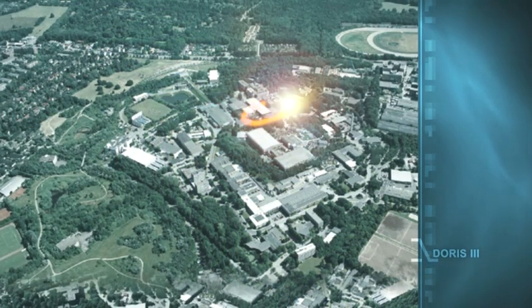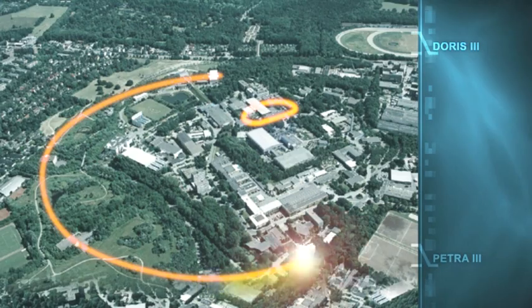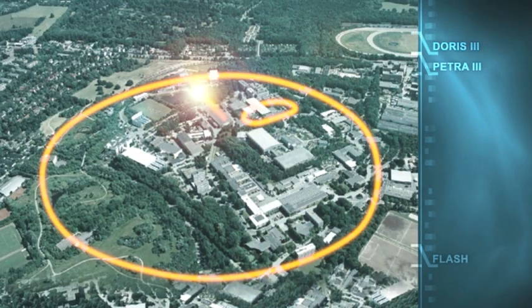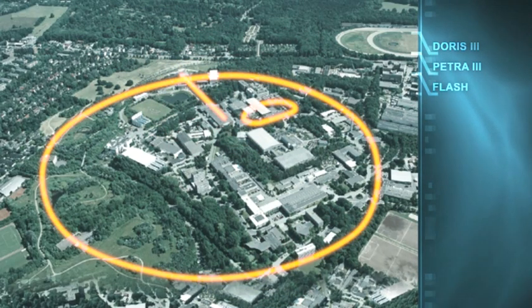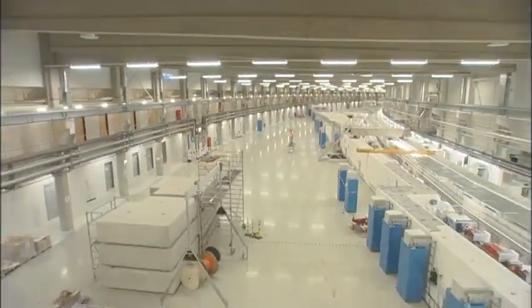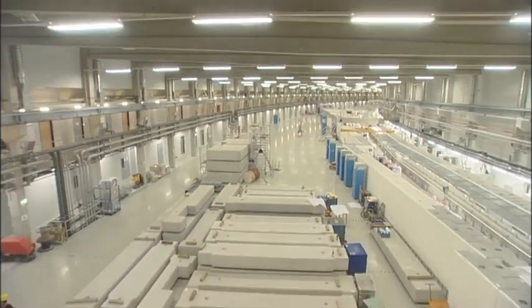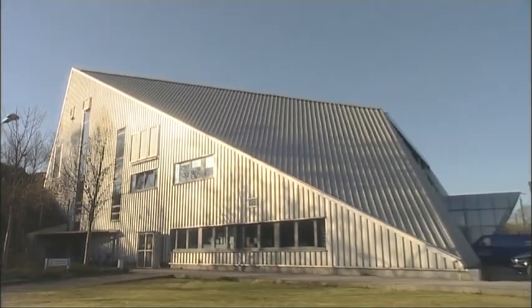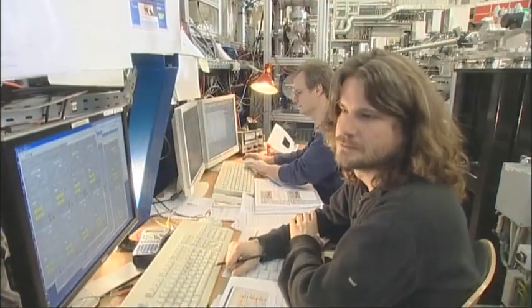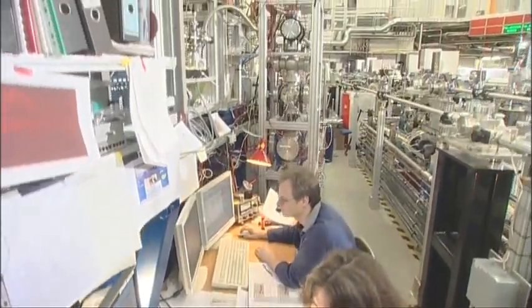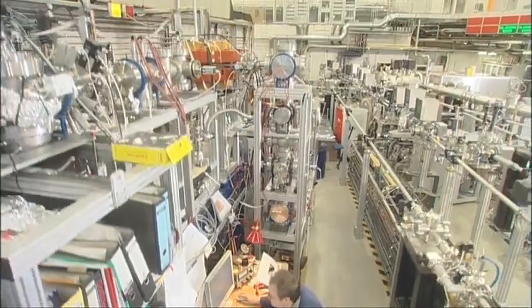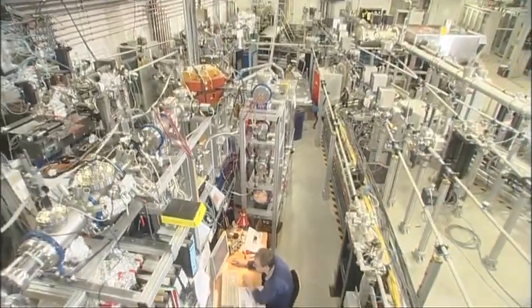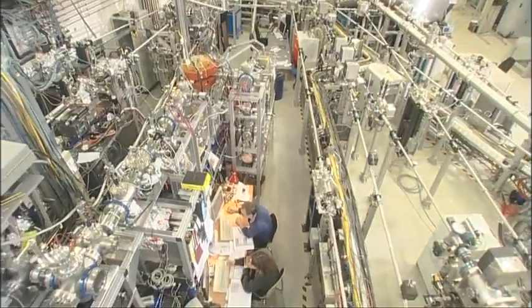These are DESY's light sources: DORIS-3, PETRA-3 and FLASH. What you see above ground is mainly their experiment halls. Almost all of the particle racetracks are hidden underground. These particle accelerators are super-microscopes, with which the researchers can penetrate into ever-tinier dimensions, deep into the microcosmos and the nanoworld. There they find completely new, fascinating possibilities.